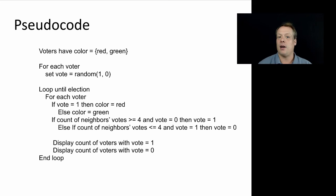Voters have color which is either red or green. For each voter, you set their vote to a random number of either one or zero. Then you loop until the election. In each loop, each voter colors themselves based upon their vote and changes their vote based upon what their neighbors are. If the count of neighbor's votes is greater than or equal to four and my vote is zero, then I vote one. Else, if the count is less than or equal to four and my vote is one, then I vote zero. Display the count of the two votes. This is another way you could express your model in more detail to make it clear for the model authors.